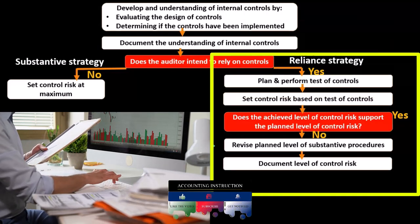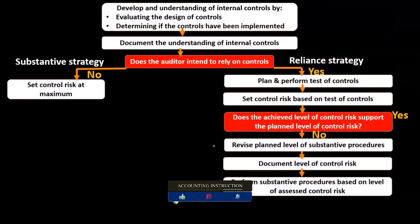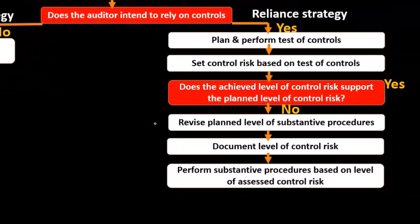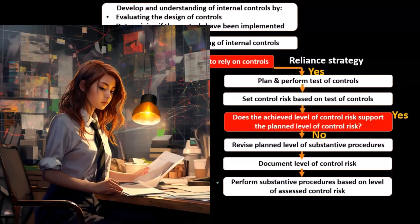We document the level of control risk determined and then perform substantive procedures based on the assessed control risk level. Once control risk is set, we move to the next stage and determine how much substantive testing we need to meet our objectives, digging into accounts and transactions on the substantive level.